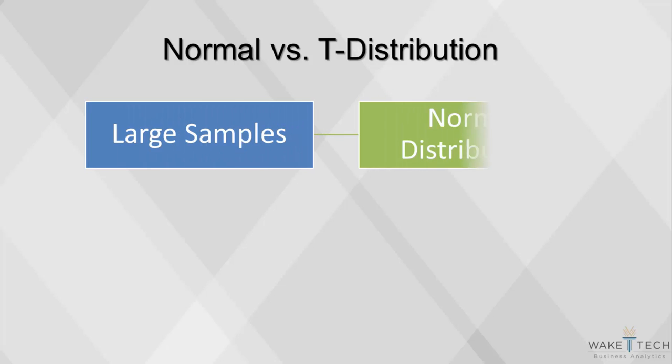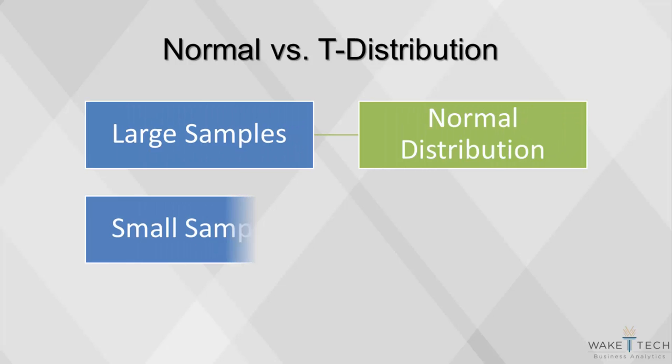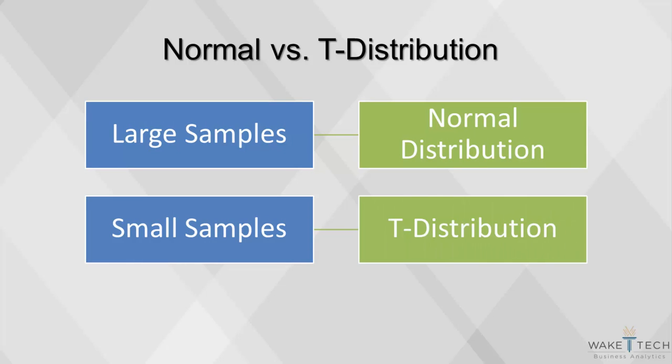For large samples, the normal distribution applies. For small samples, the standard deviation is measured imprecisely, and the data follow the t-distribution.